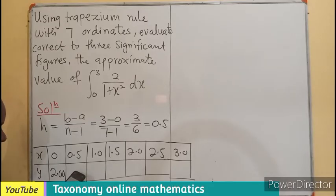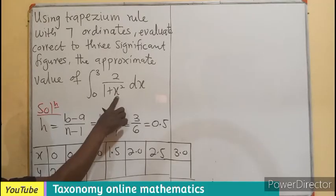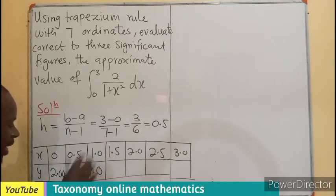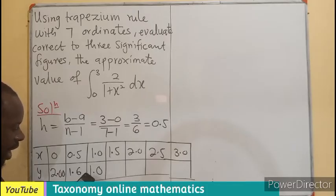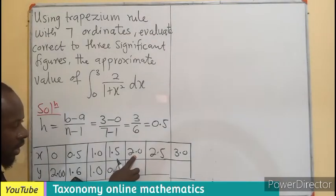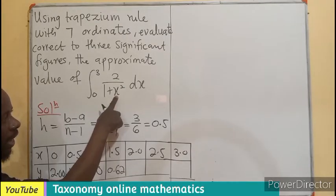That is going to be 2 divided by 1 plus 0.5 squared. So 2 divided by 1 plus 0.5 squared gives us 1.6. Here we have x being 1, so 1 squared is 1, 2 over 2 is 1.0.